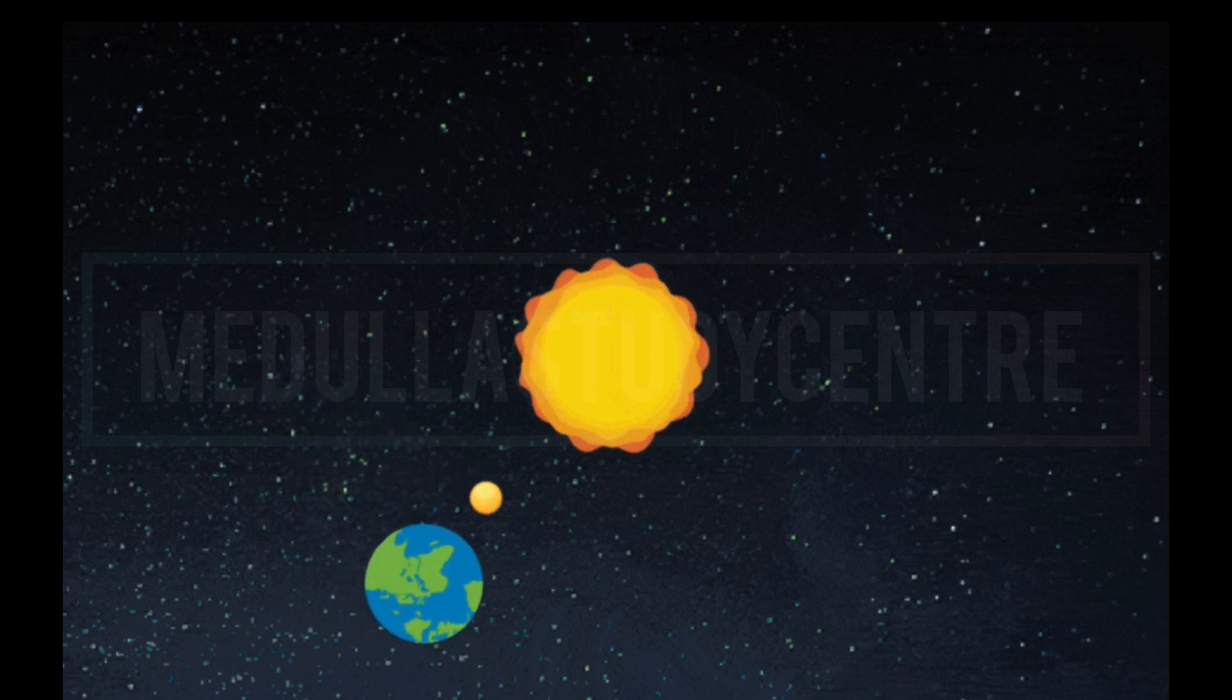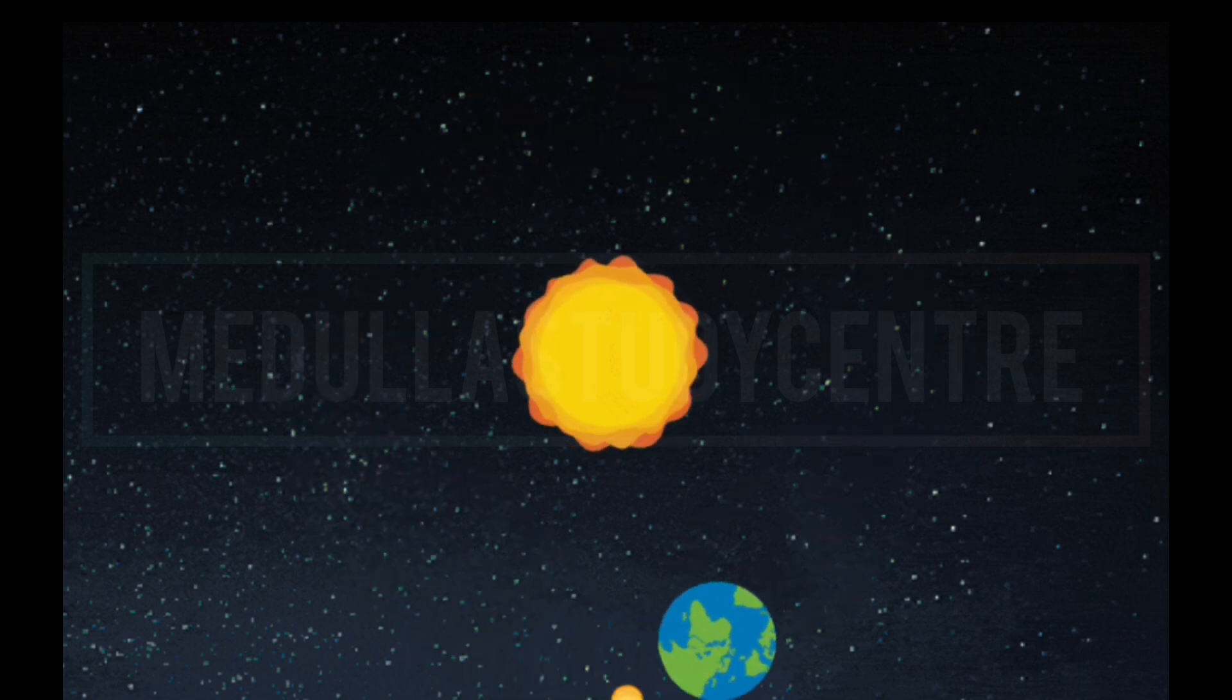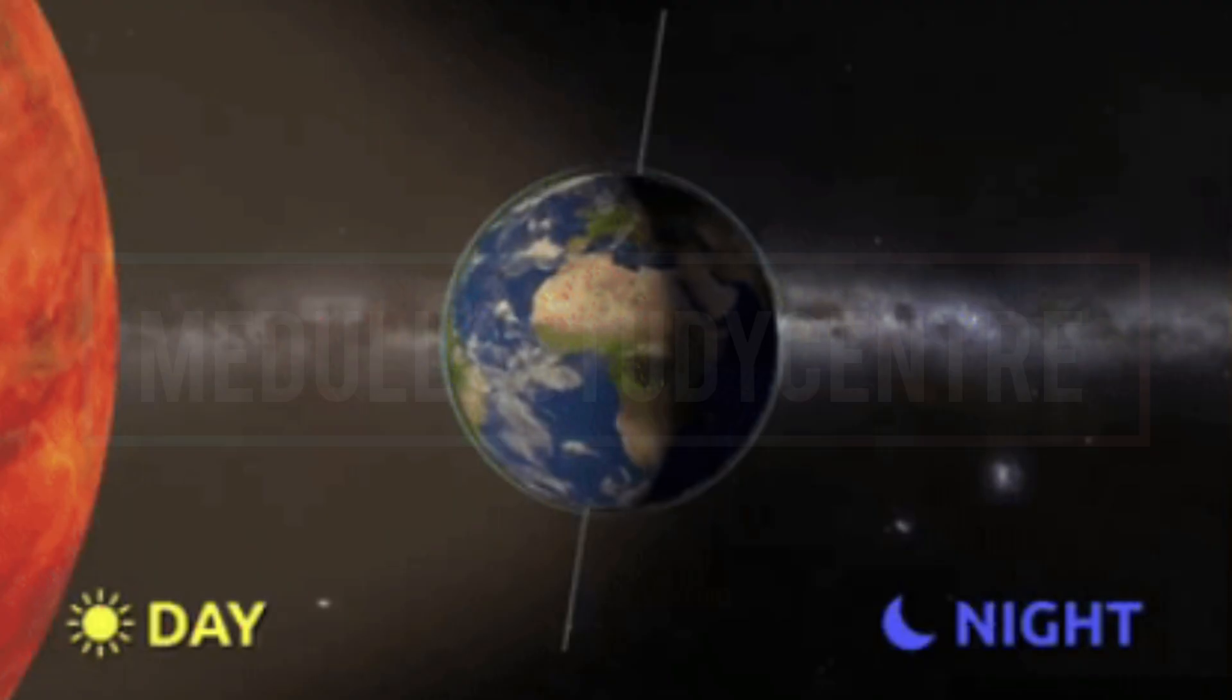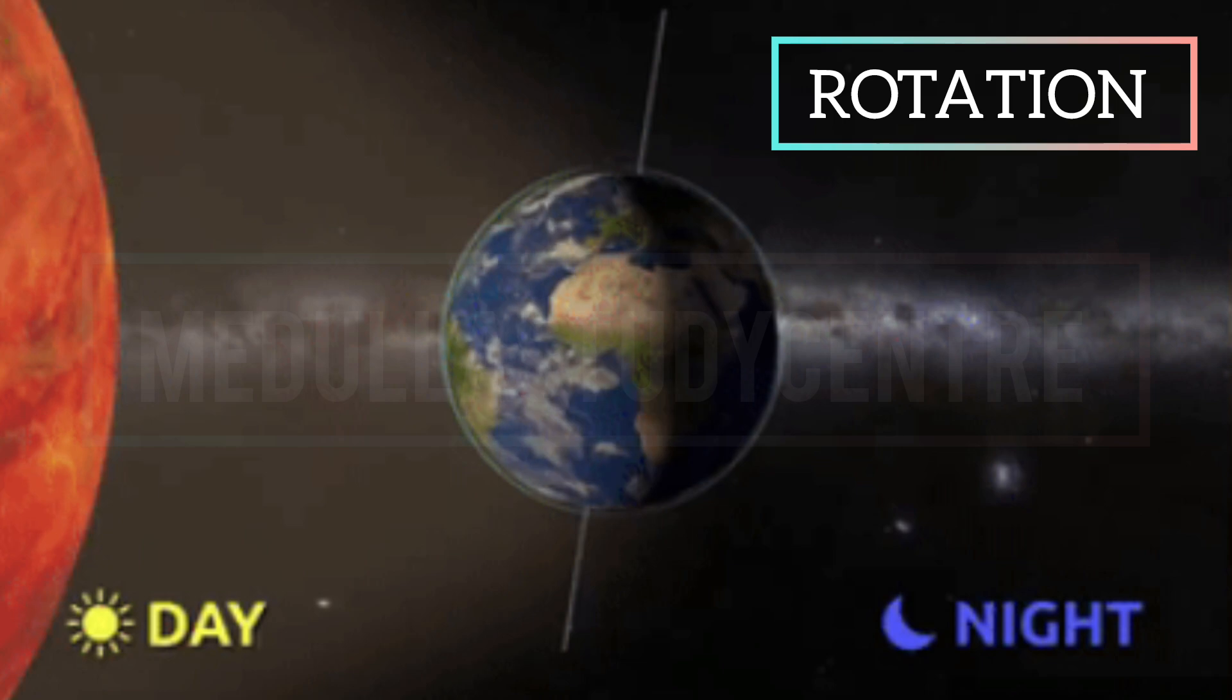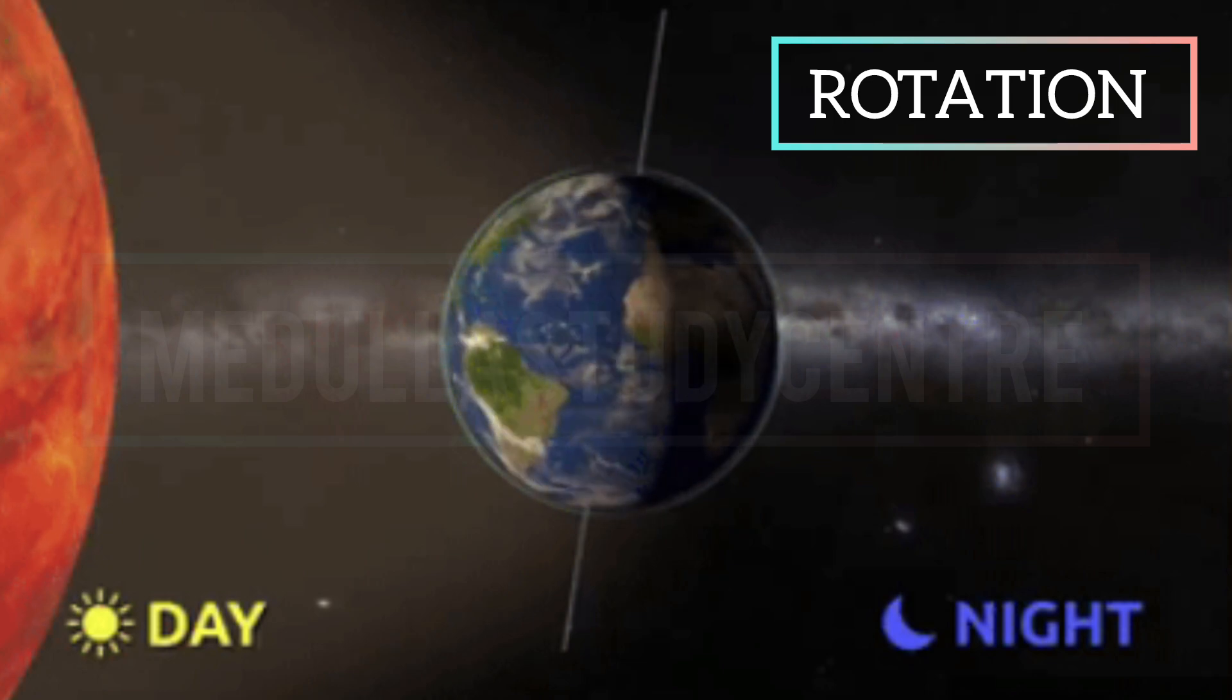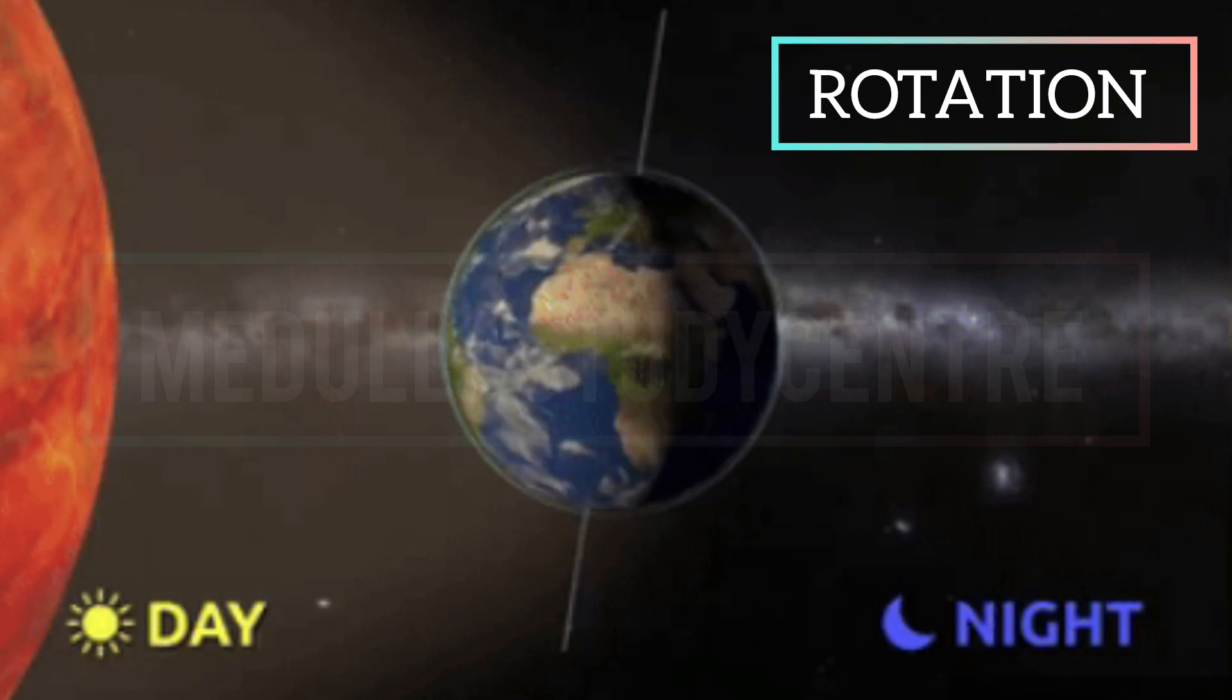Yes, our Earth makes two kinds of movements, rotation and revolution. What is rotation? When the Earth rotates on its axis, it is called rotation of Earth which causes day and night. You can see in this picture.